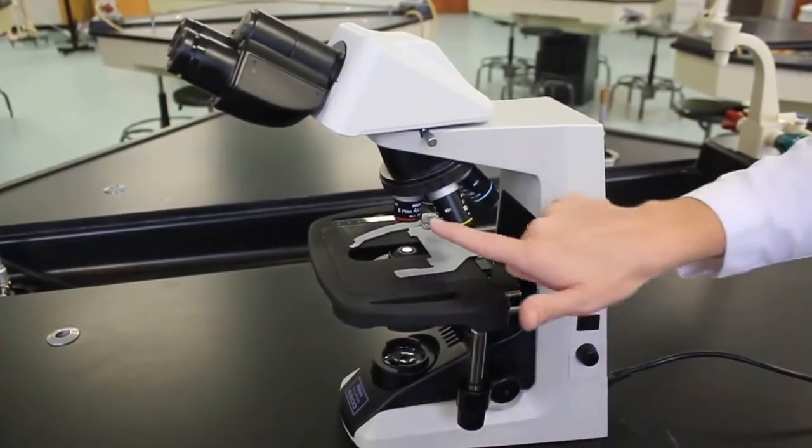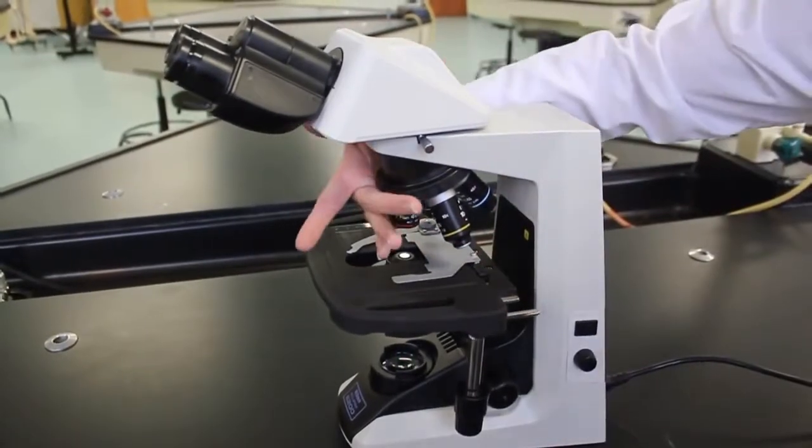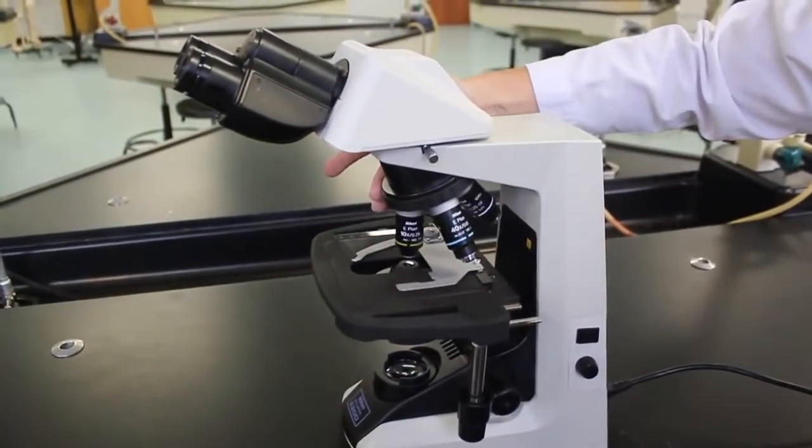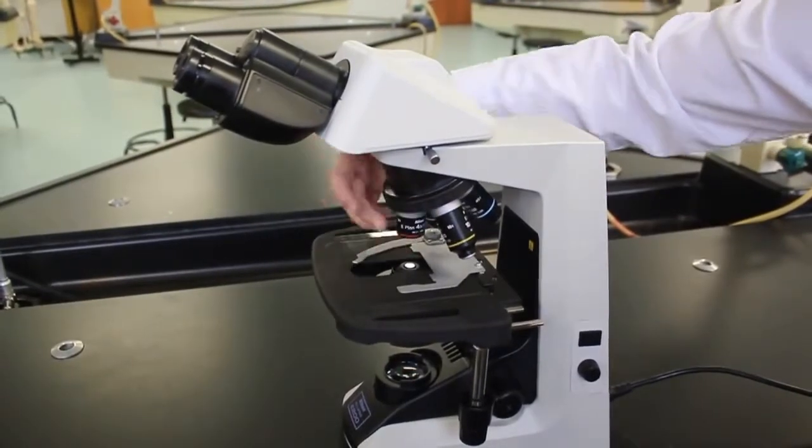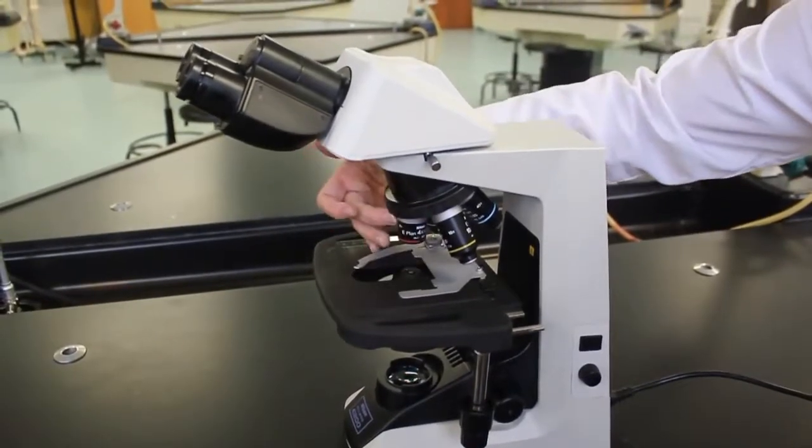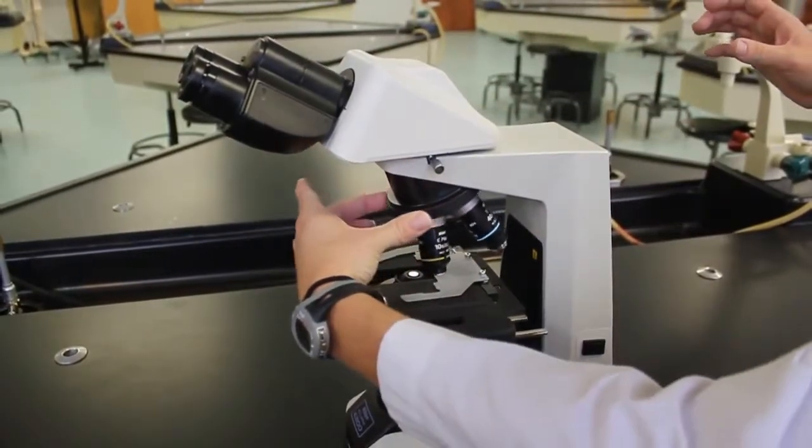When focusing the microscope, you always start with the scanning or 4x objective, then switch to the 10. Notice as I switched between objectives, I did not grab the objective to turn. You turn by grabbing the nose piece itself.